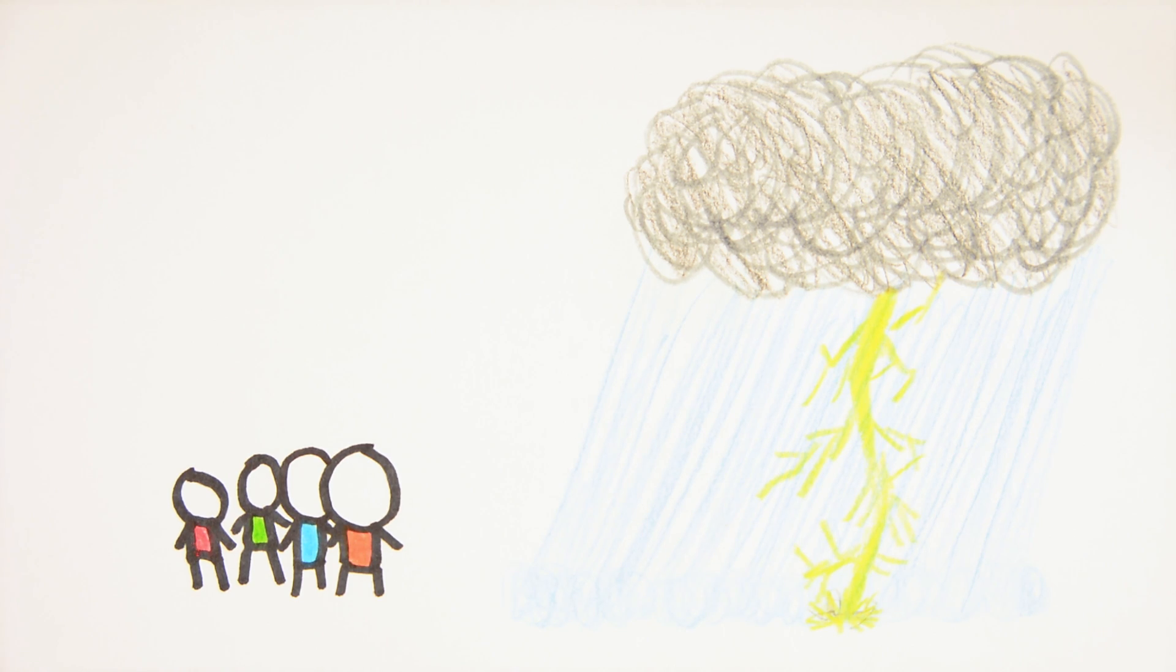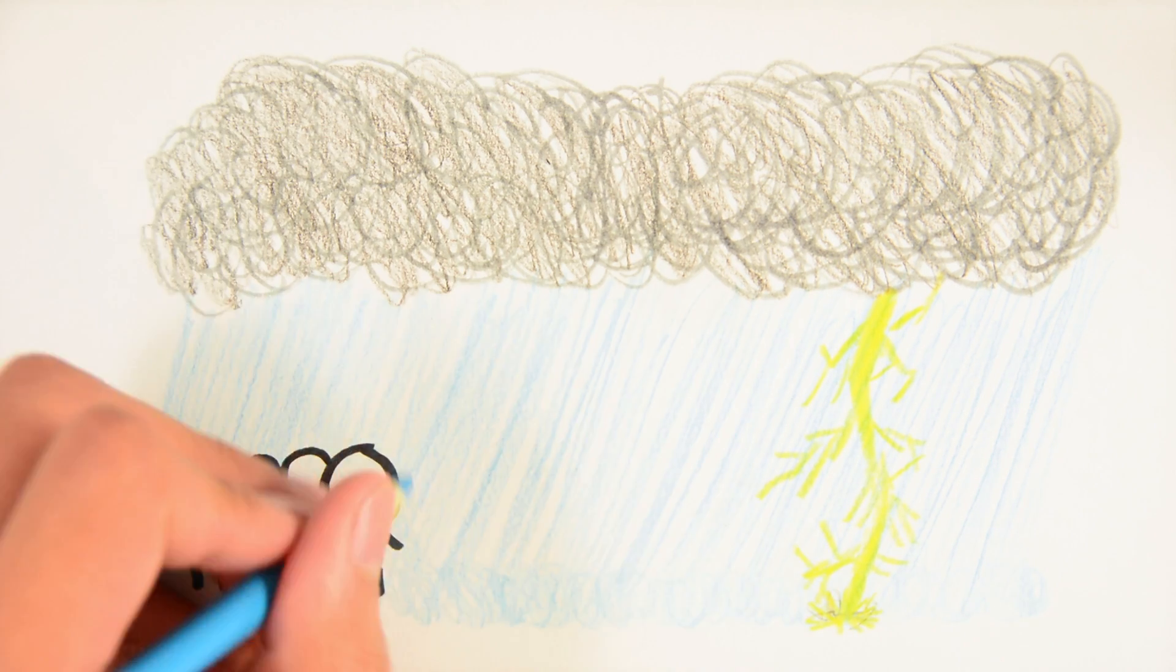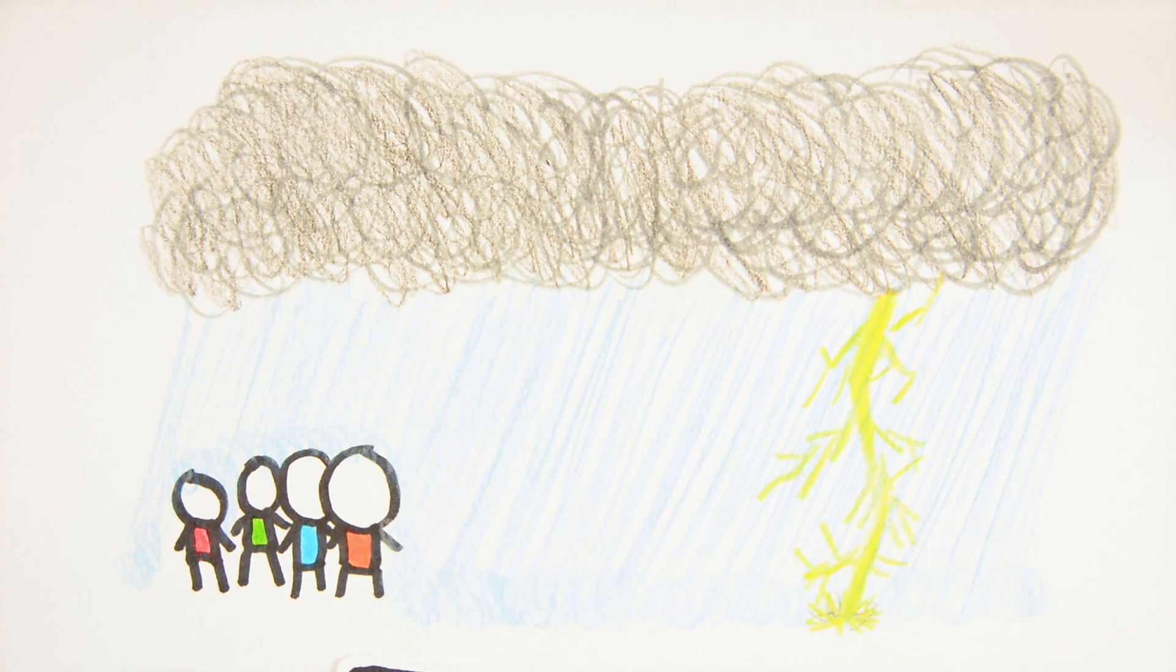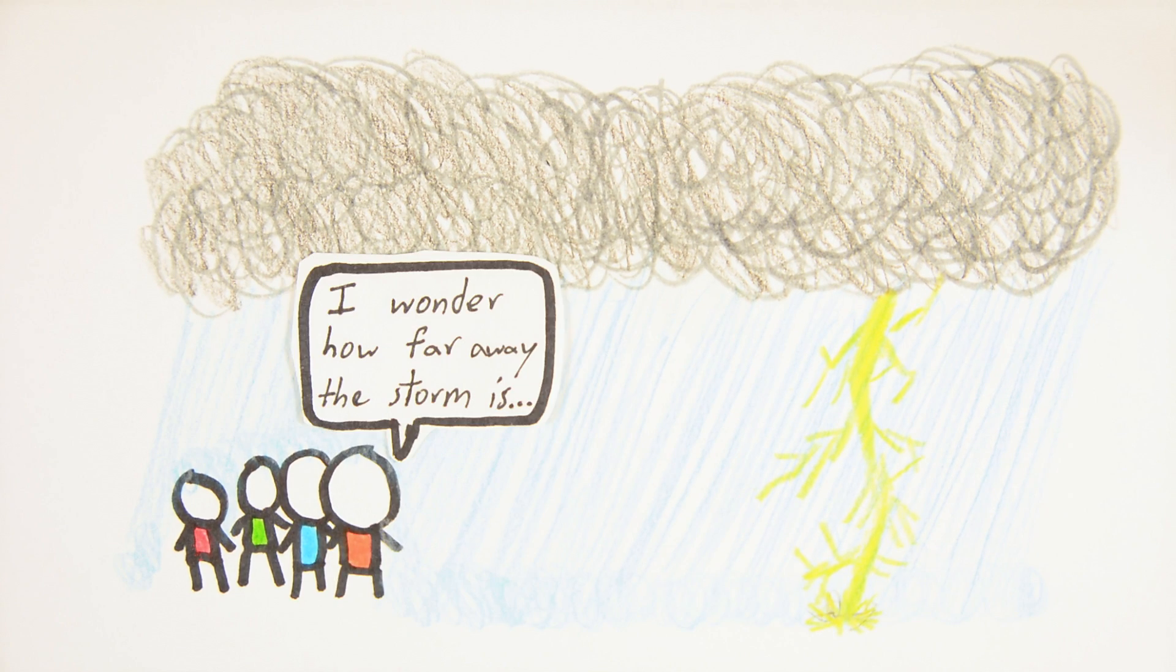Looming dark clouds and bright flashes of lightning on the horizon are obvious signs that a storm is brewing, and you could easily figure out that it's about to rain. But did you also know that you could figure out how far away the storm is?